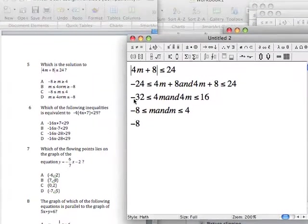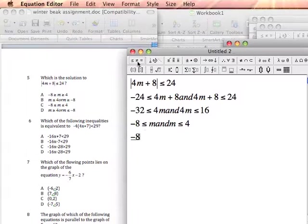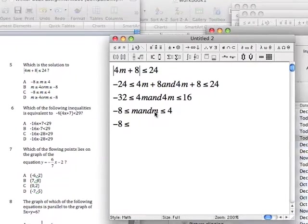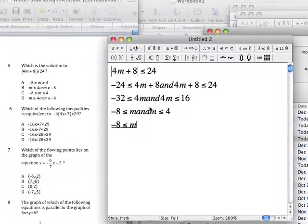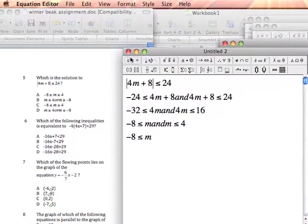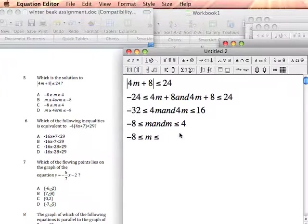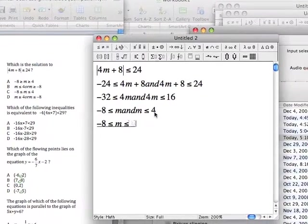I see negative 8, I type negative 8. I see the less than or equal to sign, I write it. I see the m both times, but since I'm joining them I only type it once. I see the less than or equal to sign, I write it. I see the number 4, I type 4.